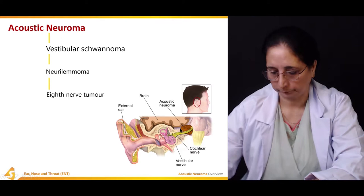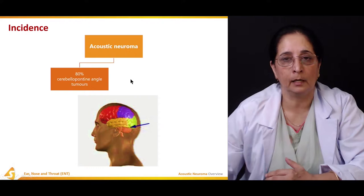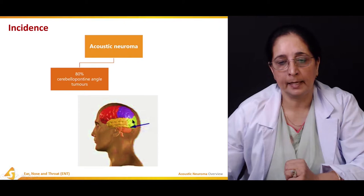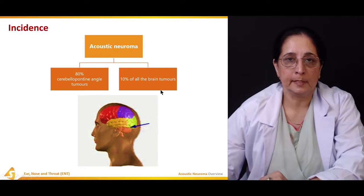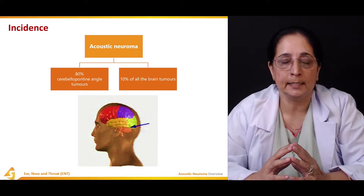Regarding incidence, 80 percent of acoustic neuromas are present in the cerebellopontine angle. The remaining 10 percent involve other parts of the brain. So the vast majority — 80 percent — are located in the cerebellopontine region.